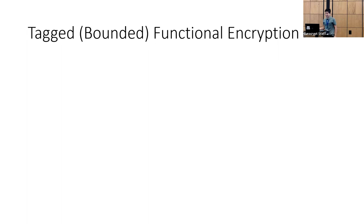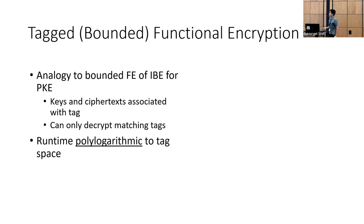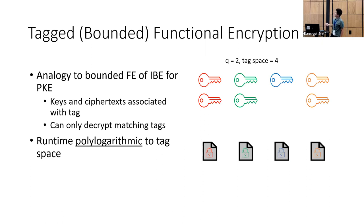We define the intermediate primitive of tag-bounded functional encryption. As mentioned, this is an analog of IBE for static bounded functional encryption. Every key and ciphertext has a tag associated with it, and it can only decrypt matching tags. Just like IBE, our efficiency is polylogarithmic in the tag space. They really are just parallel instances of the static scheme — even though the collusion bound is set to two, it's fine that we gave out seven keys in total, so long as for each single tag we've given out at most the collusion bound. Security is only broken when you exceed that on any single tag.